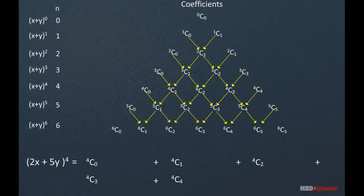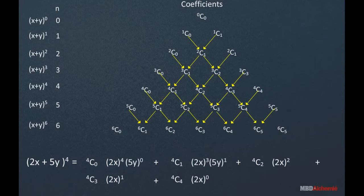Put a plus sign between them, and then write the powers of 2x decreasing from 4 to 0, and that of 5y increasing from 0 to 4.